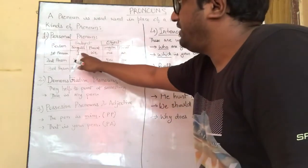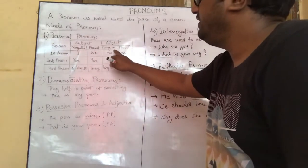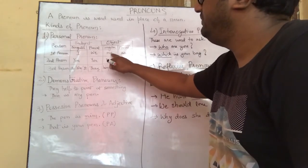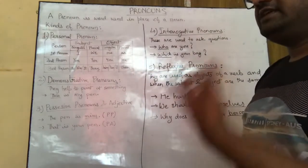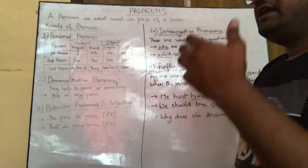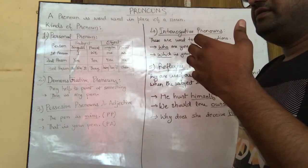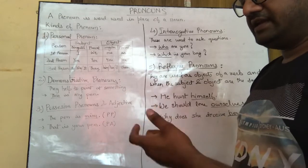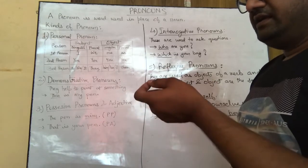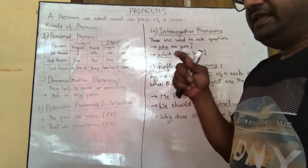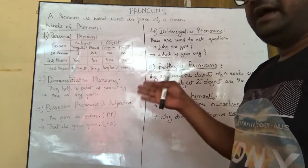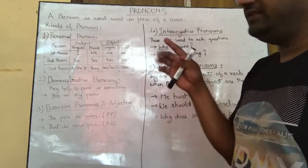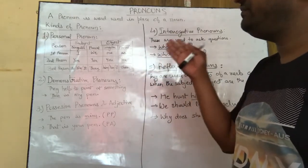The plural for 'I' would be 'we'. The singular object form would be 'me', and the plural for 'me' would be 'us'. Another example: 'Ravi came to the market. He did not buy anything.' So 'he' refers back to Ravi — that's a personal pronoun.